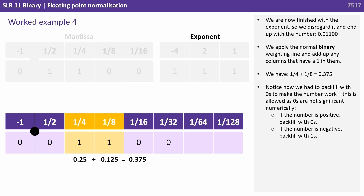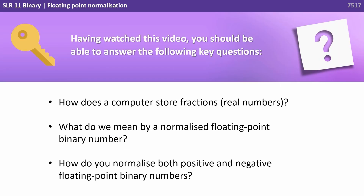If the number is positive you backfill zeros; if the number is negative you backfill with ones. Having watched this video, you should be able to answer the following key questions: How does a computer store fractions or real numbers? What do we mean by a normalised floating point binary number? And how do you normalise both positive and negative floating point binary numbers?